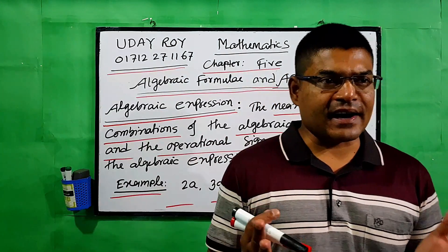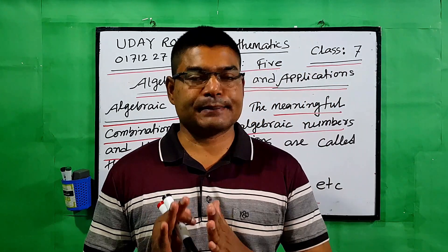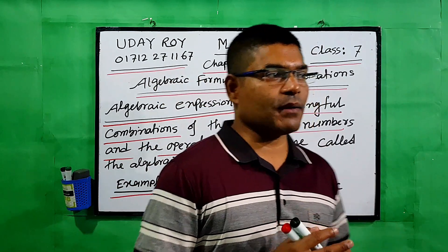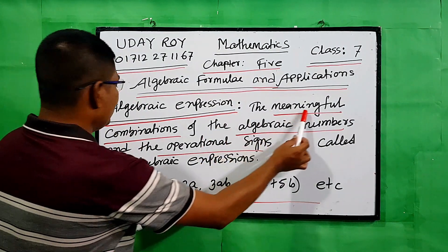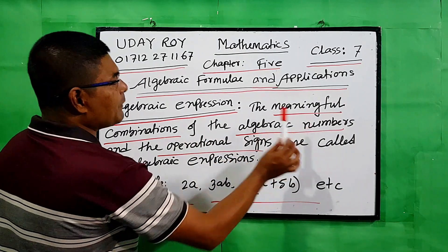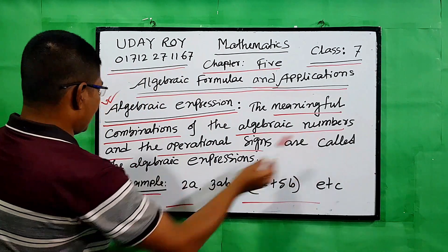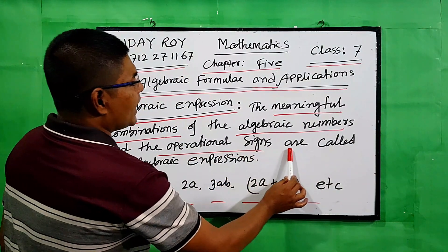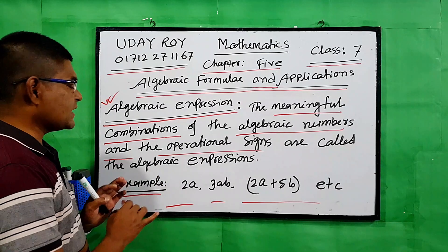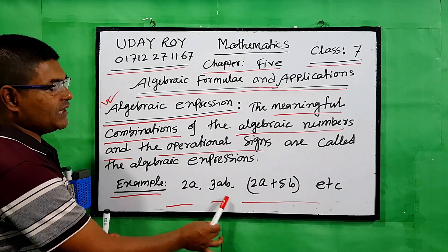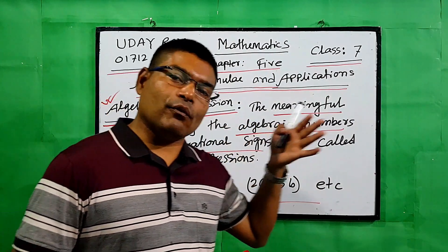Now we have to know what is called an algebraic expression, or briefly, an expression. The meaningful combination of algebraic numbers and operational signs is called an algebraic expression. For example: 2a, 3ab, and 2a + 5b, etc.